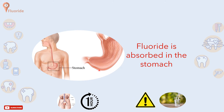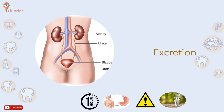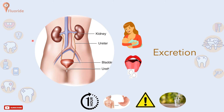When fluoride enters the body, it is absorbed rapidly, mainly in the stomach, and the peak blood level occurs one hour later. It is then excreted via the kidneys, but traces can be found in breast milk of nursing mothers and in saliva. Keep in mind that the placenta in pregnant women only allows a small amount of fluoride to cross, thus prenatal fluoride is relatively ineffective to the fetus.